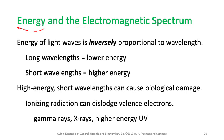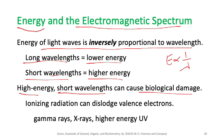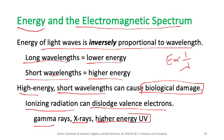Energy is inversely proportional to wavelength: longer wavelength means lower energy, shorter wavelength means higher energy. High-energy radiation with short wavelengths — such as gamma rays, X-rays, and high UV rays — can cause biological damage. These are called ionizing radiation because they can dislodge valence electrons and damage biological samples.